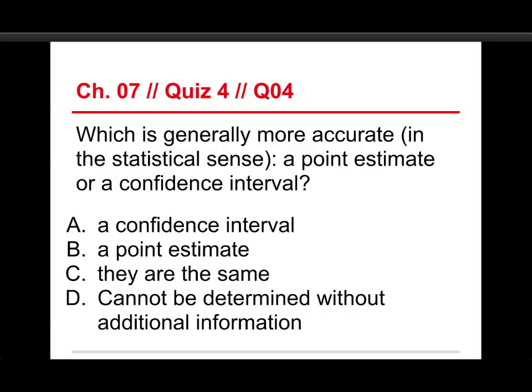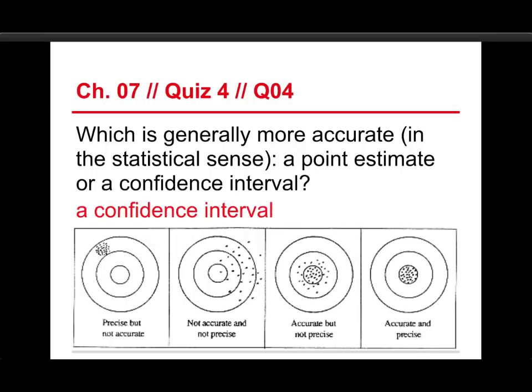Let's take a look at number four, which is generally more accurate in the statistical sense, a point estimate or a confidence interval. This time, a confidence interval is going to be the answer. The reason for that is because a confidence interval covers a range, and so it's more likely to actually include the true value. On the other hand, with a point estimate, you're basically guaranteed that it's not going to match. And because you allowed no wiggle room, you will be inaccurate. It gets back to the target metaphor here.